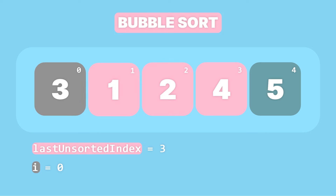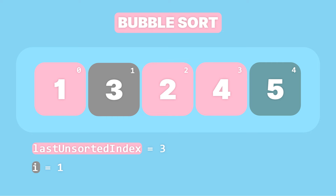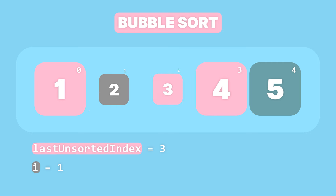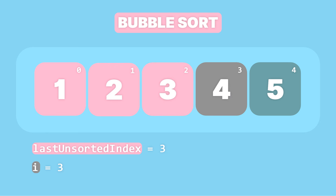Is the element at index 0 greater than the element at index 1? It is, so we swap them and increment i to 1. Is the element at index 1 greater than the element at index 2? It is, so we swap them and increment i to 2. Finally, is the element at index 2 greater than the element at index 3? It isn't, so we do nothing and increment i to 3. At this point, i equals the last unsorted index, meaning we reach the last element of the unsorted partition, so we stop. With that, 4 is now at its correct position, so our last unsorted index is now set to 2. Everything from the beginning of the array to index 2 represents the unsorted partition, while everything from index 3 to the end represents the sorted partition.